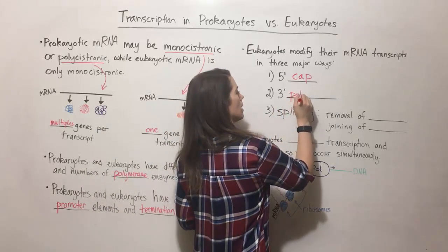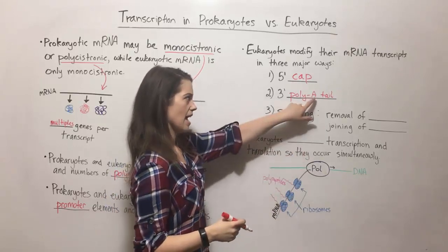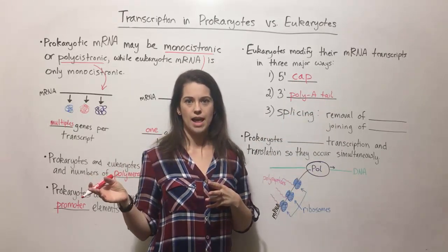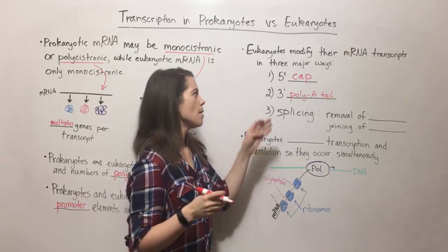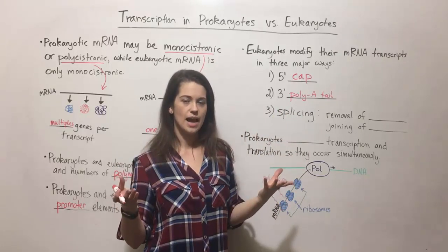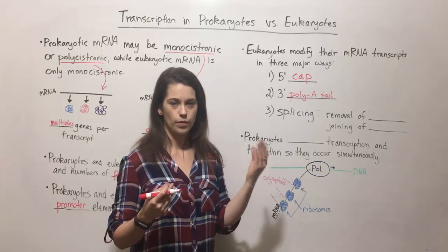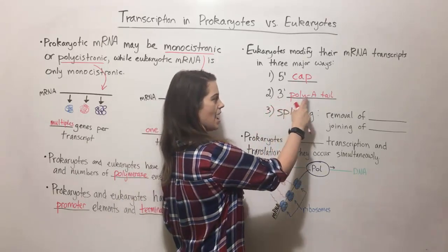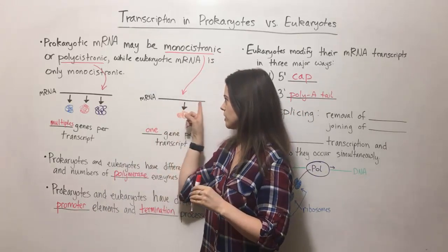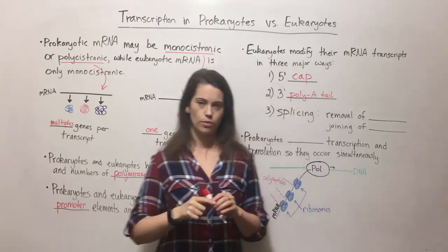There's also getting a three-prime poly-A tail. This is when multiple adenines — poly-A means multiple adenines — are tacked on to the end of the mRNA. That's to protect the mRNA, because once it exits the nucleus through a nuclear pore and goes out into the cytoplasm to be translated, there are proteins that will actually degrade RNA, chewing it up from the three-prime end. Since the three-prime end has this poly-A tail, those enzymes can chew up the tail without disrupting the actual mRNA sequence coding for protein. So it's a protective mechanism.